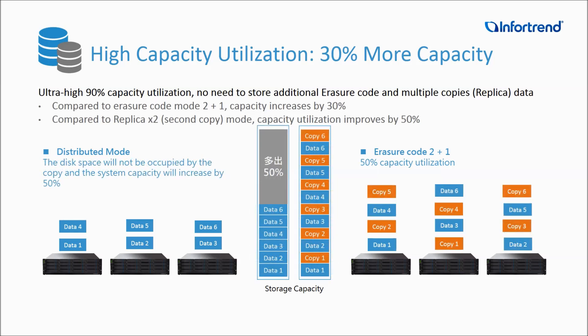When we compare Distributed Mode with replica x2 mode, each file requires a copy which occupies the same amount of space as the initial file, so in replica mode, half of the space is devoted to copies, while in Distributed Mode, space will be increased by 50% by not making a copy. Therefore, not only is the space utilization rate improved in Distributed Mode, but thanks to supported RAID data protection, high data security is also provided.